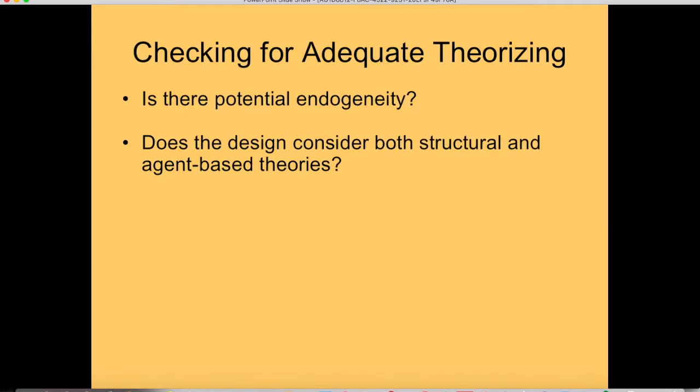We might also ask whether we've considered both structural explanations and agent-based explanations. Structural explanations have to do with structures that go beyond individuals — governments, institutions, rules, norms. Agent-based explanations have to do with individual agents, or other units; countries could be agents in a sense. There we're looking at variation among agents to explain outcomes rather than variation in structures.